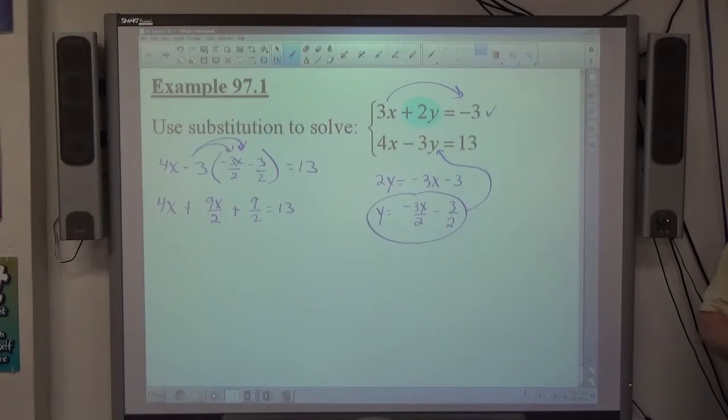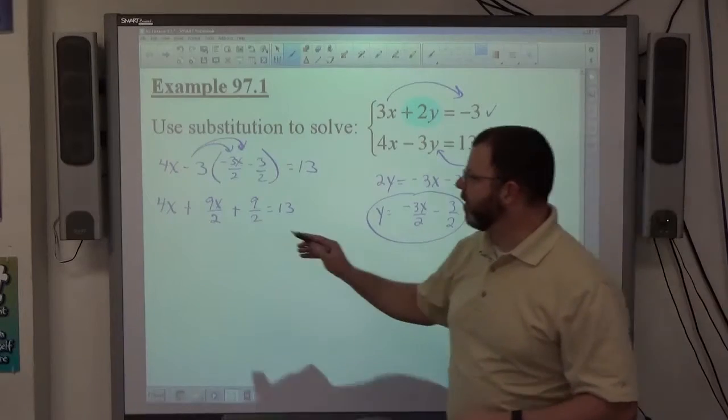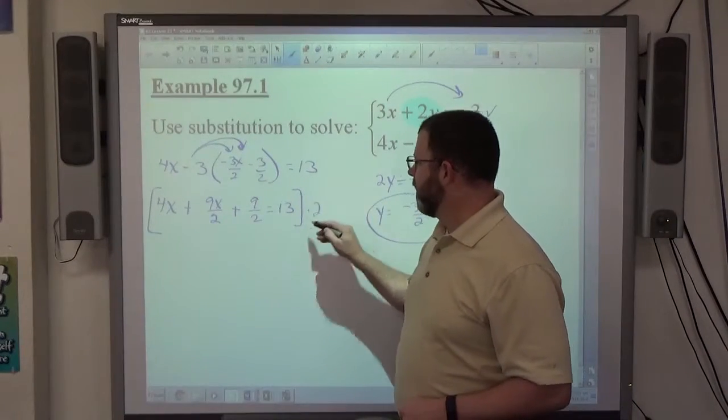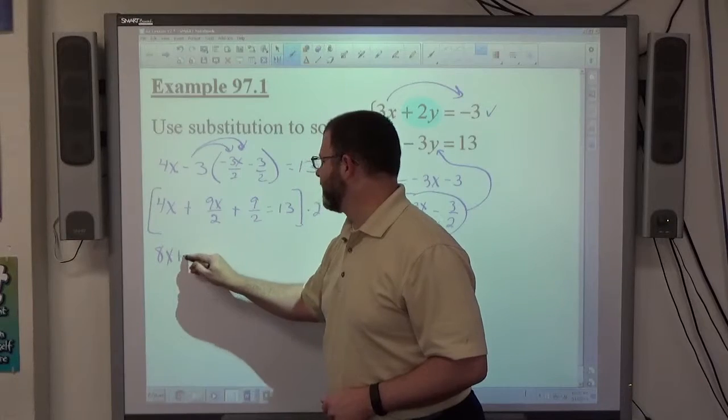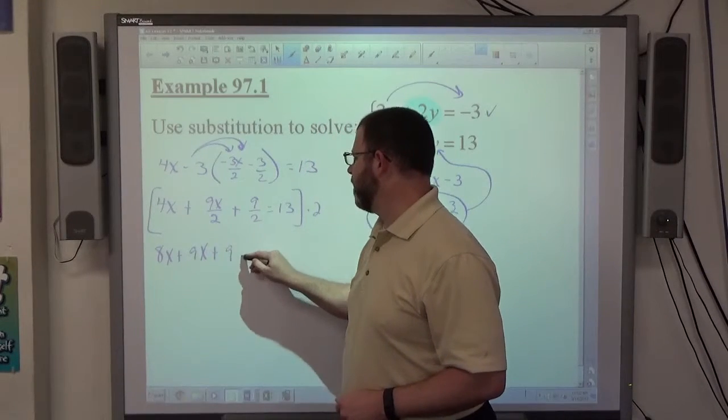Now that I've done that step and there's no more parentheses in the problem, if I don't want to have fractions, I can now multiply everything times 2 if I feel like it. That gets me 8x plus 9x plus 9 equals 26.